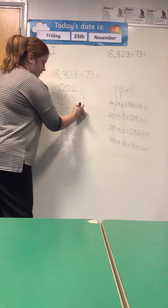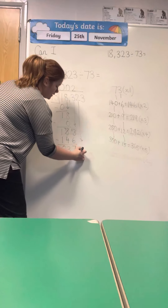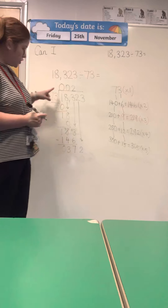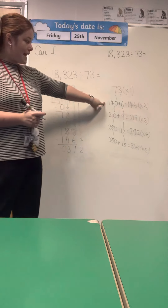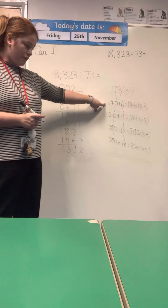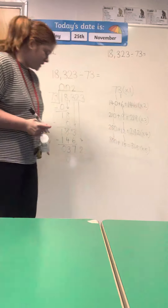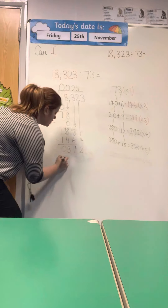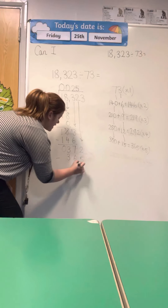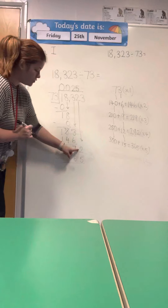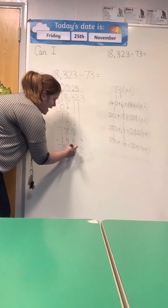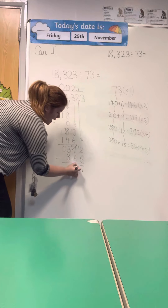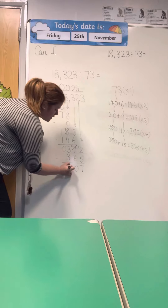Now we go to bring it on down — I'm bringing down the 2 from the tens. So now I'm doing 372 divided by 73. I'm going to refer back to my multiples of 73. I can see that 365 is the closest, so I'm going to put a 5 above the 2 and subtract 365. We can't do 2 take away 5, so we take 1 from the tens: 12 take away 5 is 7, 6 take away 6 is 0, 3 take away 3 is 0. That's subtract.